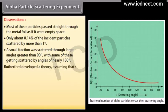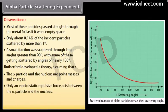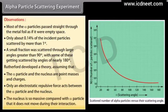Rutherford developed a theory assuming that the alpha particle and the nucleus are point masses and charges, and that only an electrostatic repulsive force acts between them. The nucleus is so massive compared with the alpha particle that it does not move during the interaction.